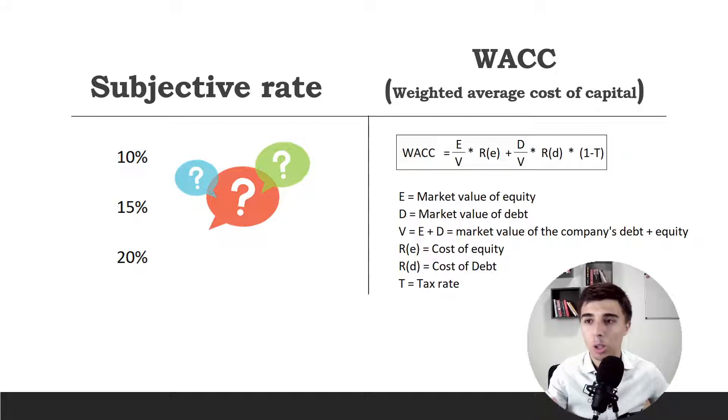The difference between these two individuals and the outcomes is that if they want the 10% or the 20%, they should be paying different prices. So the outcome of our model when we're using a subjective rate is: how much should I be willing to pay for this business to get the 10% return or the 20% return?